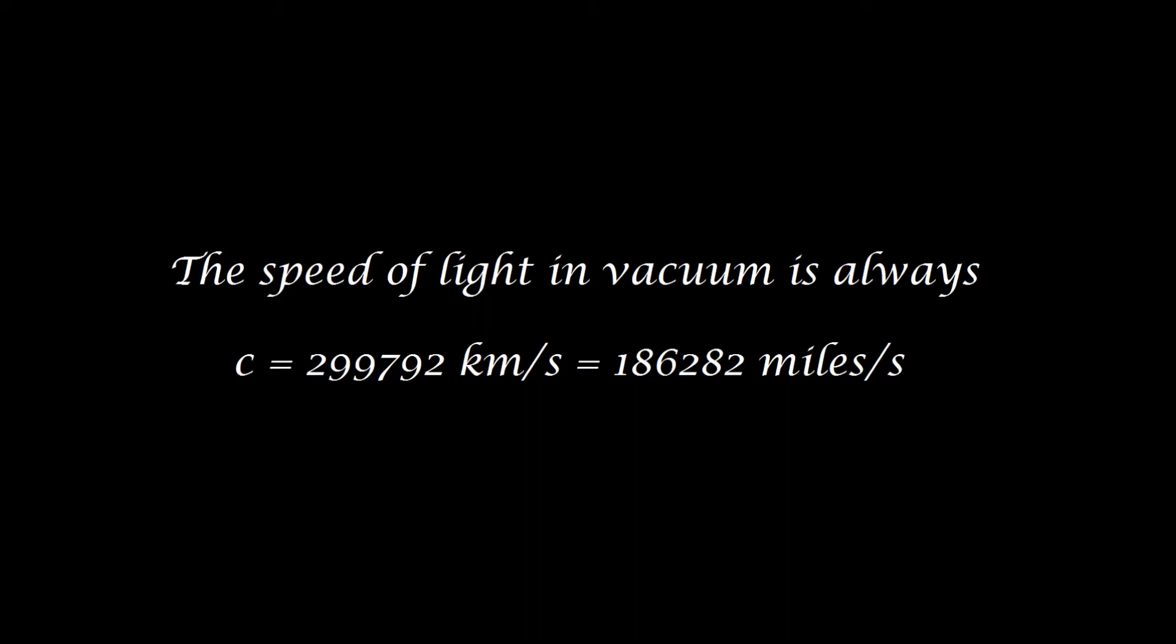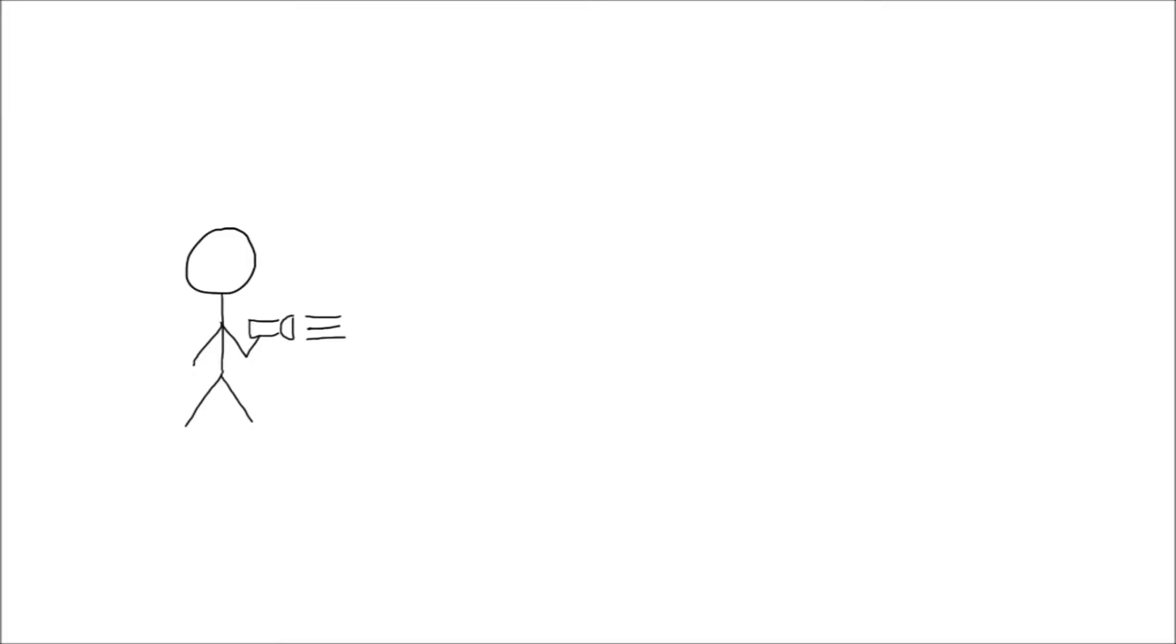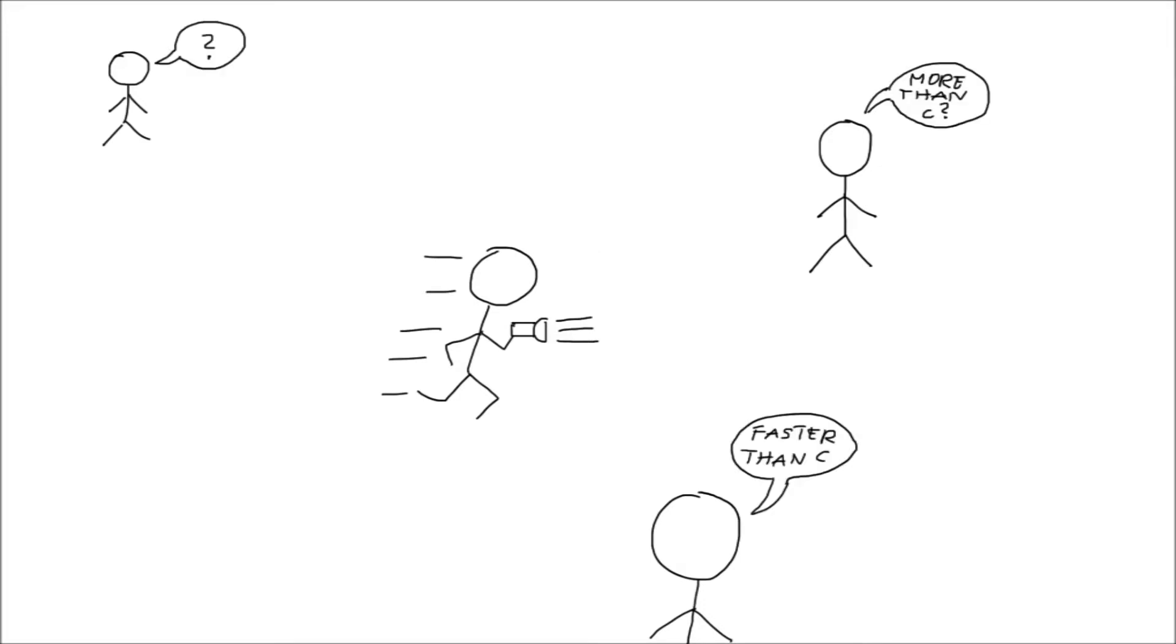For example, if a person turns on a flashlight, everyone would agree that the speed of light from this flashlight is c. However, if the person starts running, shouldn't the speed of light from the flashlight be higher than c?